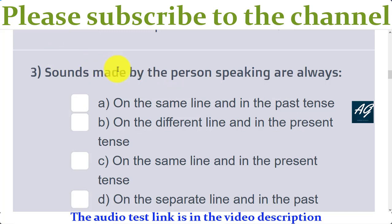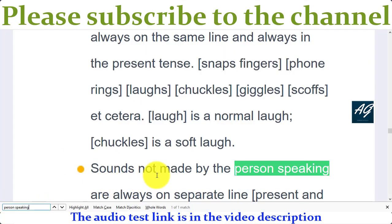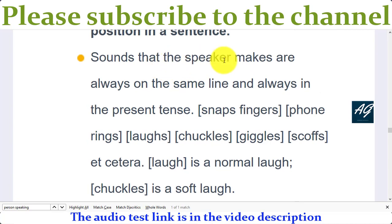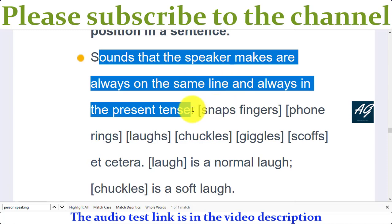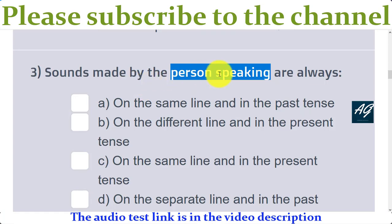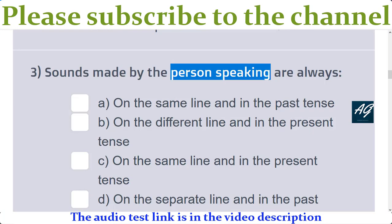Third question is: sounds made by the person speaking are always on the same line. I check in the transcription guidelines — sound not made by the person speaking is always on a separate line; sound that the speaker makes is always on the same line and always in the present tense. So the answer is: same line and in the present tense. The third option is correct — on the same line and in the present tense. So the answer to the third question is C.